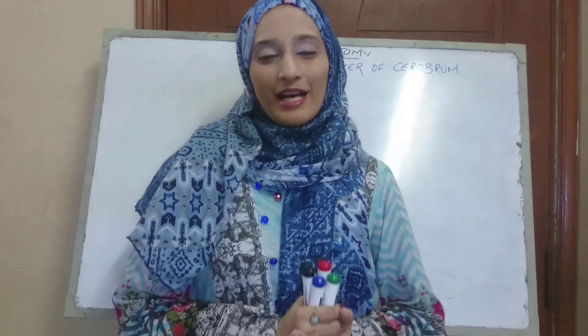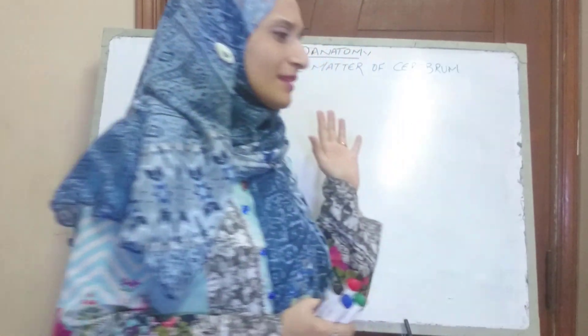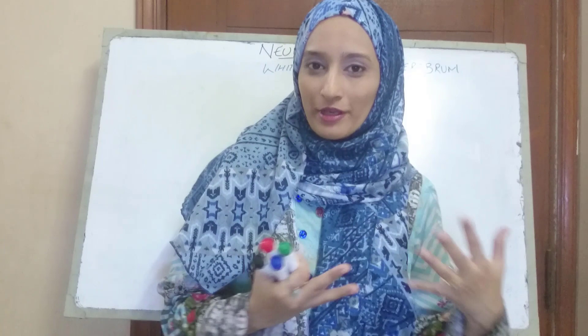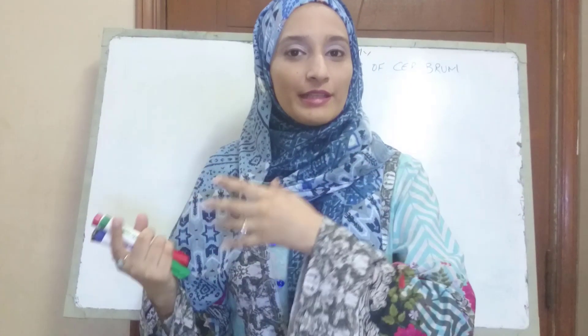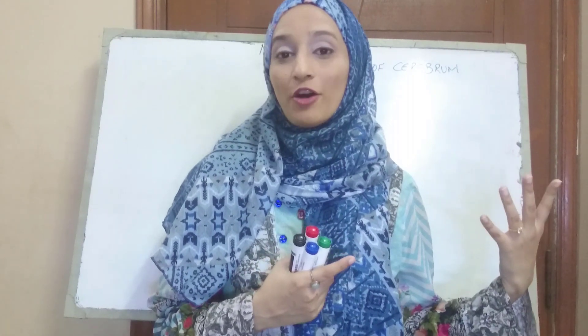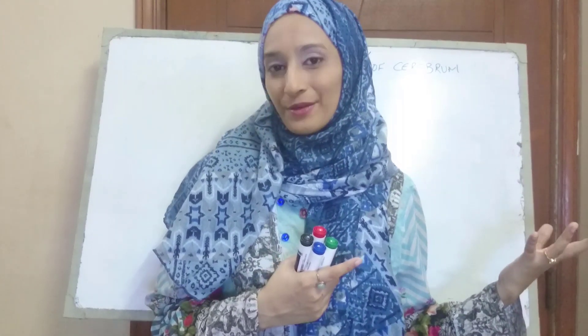Welcome. The topic for today's discussion is the white matter of the cerebrum. Remember when we talked about neurons, the structural and functional unit of the nervous system — the neuron has two components: the cell body, the soma and its processes. That long process is known as the axon, and if present in bundle form, it makes up the white matter.